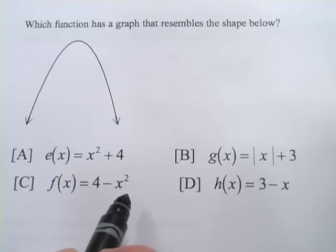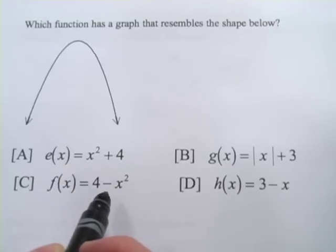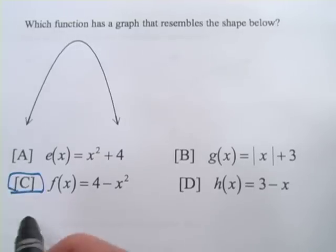They're both quadratics, because they both have the x squared in them. But this one, c, has the negative sign in front of the x squared, which is going to flip that u upside down. So correct answer, c. And that's a little more work with recognizing nonlinear functions.